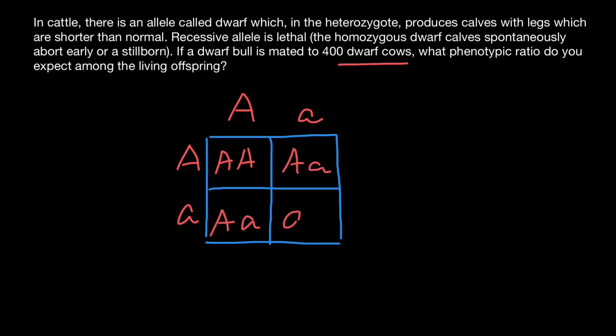capital A, small a here; and small a, small a here. This genotype, which is homozygous recessive, we are not going to see because it's going to result in early abortion or stillborn. So actually, what we are going to see is just these three genotypes.